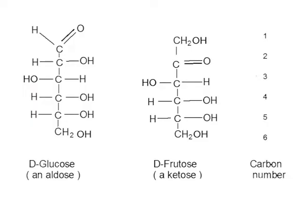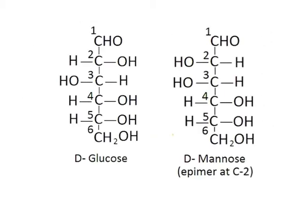The D or L configuration depends on the arrangement of the hydroxyl group at the chiral carbon. In the cases of glucose and fructose, this is at C5. Two sugars that differ only in the configuration around one carbon atom are called epimers. D-glucose and D-mannose, which differ only in the stereochemistry at C2, are examples of epimers.